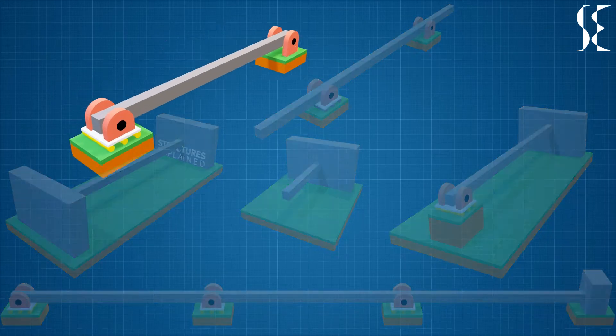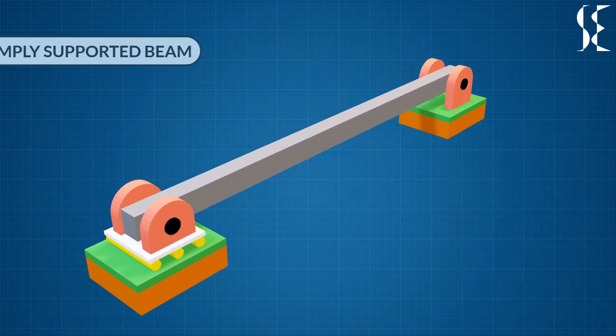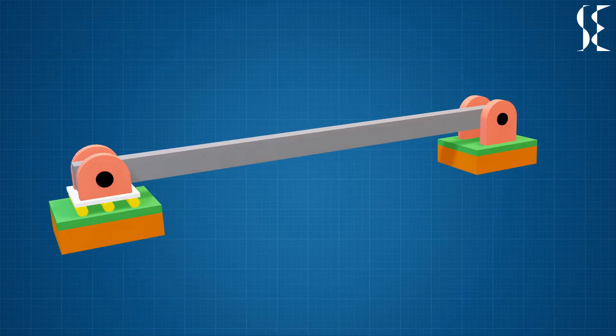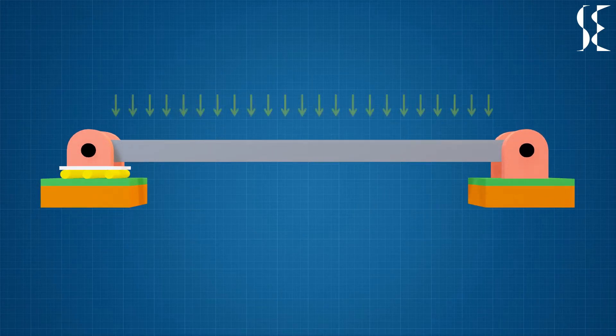Starting from the simplest of the beam, the simply supported beam rests on a pin and roller support. Pin support allows rotation and roller support allows rotation and lateral movement. The deflected shape of the beam in 2D would look something like this on loading.